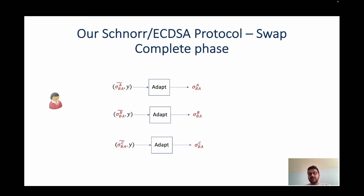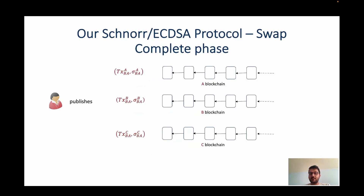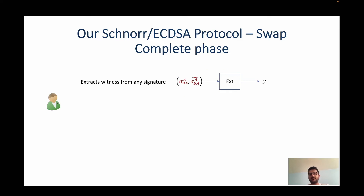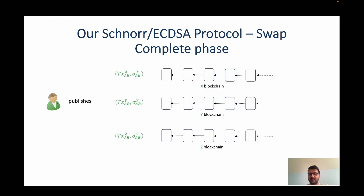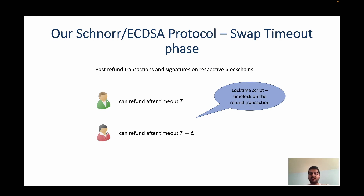In the swap complete phase, Alice uses the adapter witness she knows to adapt all the pre-signatures on the right side into valid signatures, then publishes these transactions on the respective blockchains and gets paid. Bob can pick any transaction signature Alice published on any blockchain on the right, and since he has the corresponding pre-signature from the lock phase, he extracts the adapter witness using the extraction algorithm. Bob then adapts the pre-signatures on the left side to valid signatures — as they were generated with respect to the same statement-witness pair — publishes those transactions, and gets paid on the left. Finally, in the timeout phase, if Alice fails to get paid on the right or Bob fails to get paid on the left, parties can refund their coins after the channel expiry.